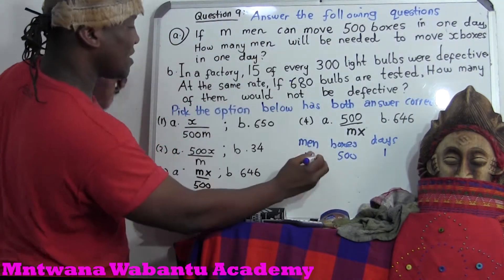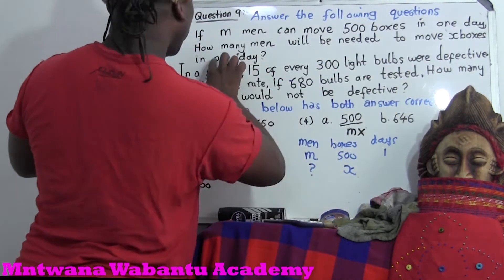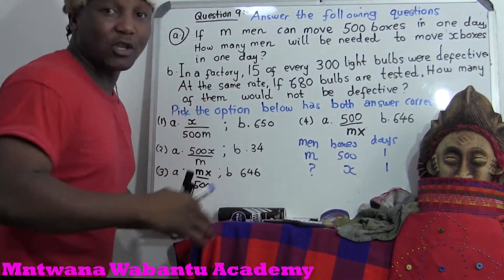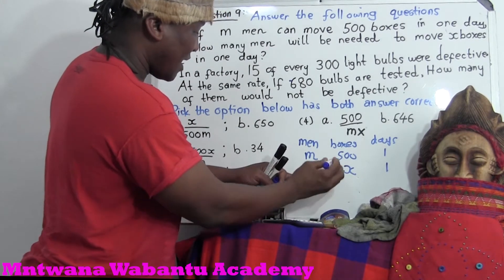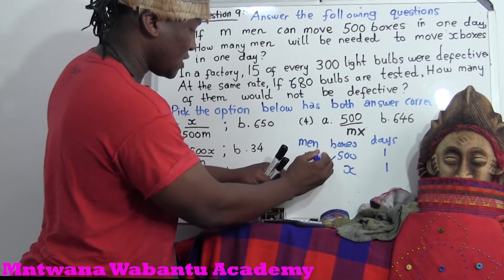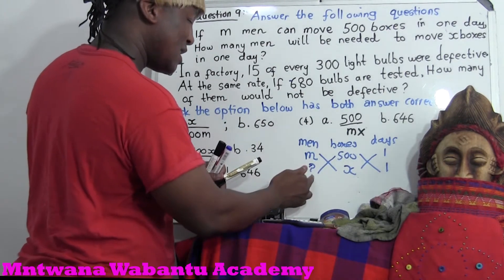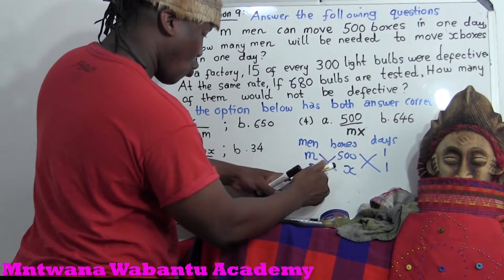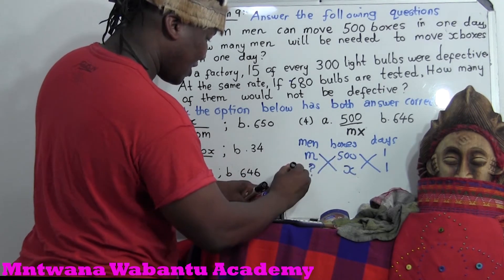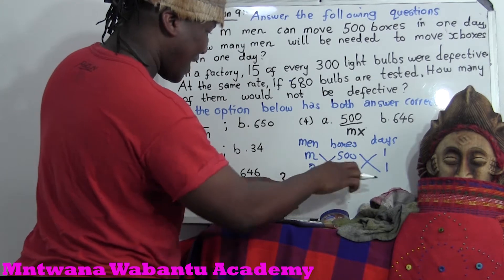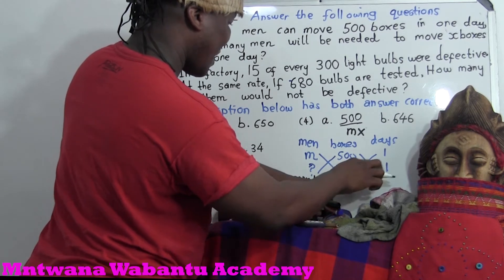Now we come for the second row. How many men? We don't know how many men. Were needed to move X boxes — number of boxes now is X. How many days? One day. According to what they have given to you. So what you want to do now — you cross. Remember you're looking for how many, means this question mark. You write cross here, and instead of having a cross, you multiply based on the line of a cross. What we're looking for — multiply — question mark multiplied by 500, multiplied by 1, must be equal to M multiplied by X, multiplied by 1.